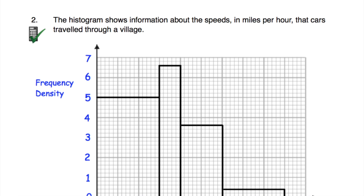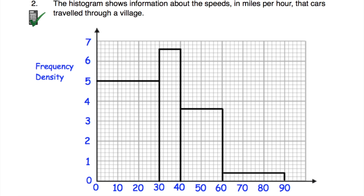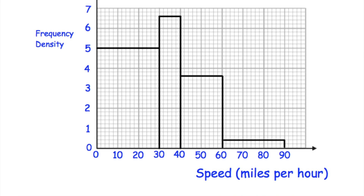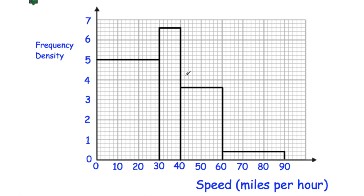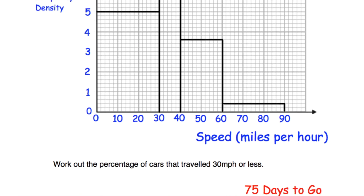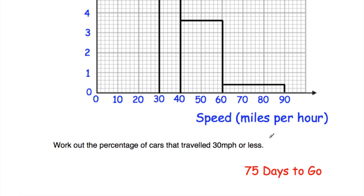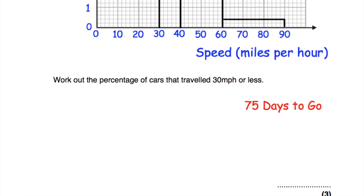Question number two is on histograms. We've got speeds in miles per hour of cars for a village, with frequency density on the vertical axis and speed horizontally. We've been asked to work out what percentage of cars travelled 30 miles per hour or less. Work out the frequency using frequency density times class width for each bar, find how many cars were travelling 30 mph or less, and write it as a percentage. We covered reading histograms 75 days ago.